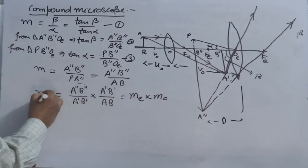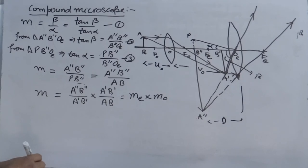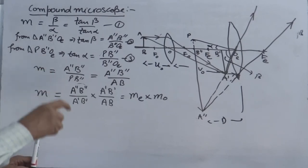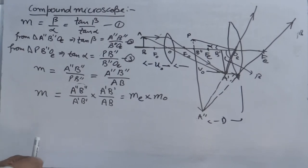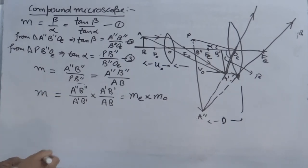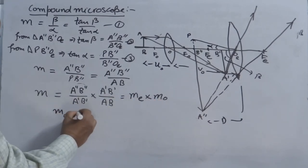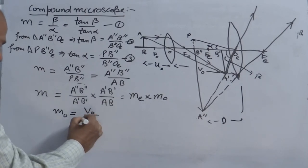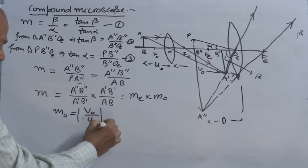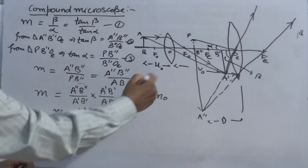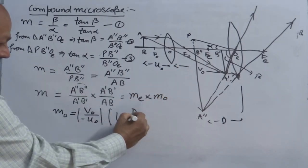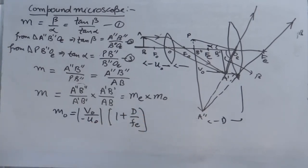Therefore, the net magnifying power of the compound microscope is the product of the magnifying power of the objective lens and the eyepiece lens. That's why practically on microscopes in the biology or physics lab, the eyepiece lens is always marked as 5x or 10x, meaning the image of a tiny object is magnified that many times. So M_o equals v_o over u_o (as a simple lens), and M_e equals 1 + D/f_e (as a simple microscope), giving the complete magnifying power of the compound microscope.